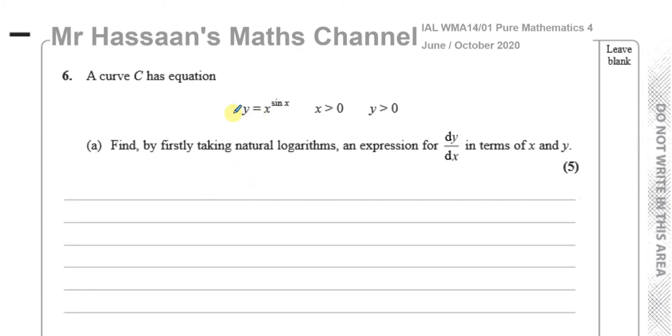Because right now the function is written with y as a subject explicitly, but it's not easy for us to differentiate this the way it's written. So what they've asked us to do is to take the natural logs, the ln of both sides, in order for us to write it in a way that's easier for us to differentiate. Normally it's easy to differentiate in this form, but in this case it's not because you have x to the power of sine x. So they've given us a clue as to what to do, which was kind of, you know, a bit kind of them. They don't have to actually tell you to do that.